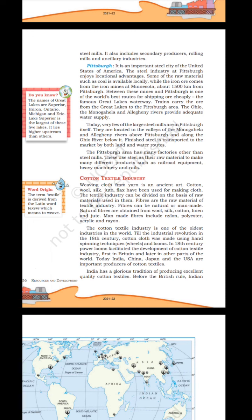Cotton textile industry: Weaving cloth from yarn is an ancient art. Cotton, wool, silk, jute and other fibres have been used for making cloth. Fibers are the raw material of the textile industry and can be natural or man-made. Natural fibres are obtained from wool, silk, cotton, linen and jute; man-made fibres include nylon, polyester, acrylic and rayon. The cotton textile industry is one of the oldest in the world. Until the industrial revolution in the 18th century, cotton cloth was made using hand spinning wheels and looms. Power looms then facilitated development of the industry, first in Britain and later worldwide. Today India, China, Japan and the USA are important producers of cotton textiles.